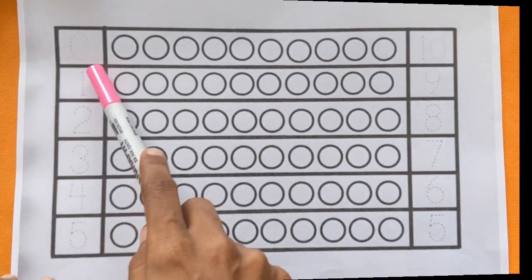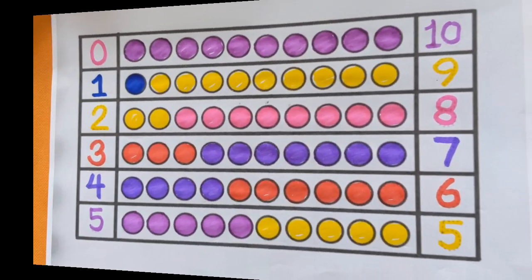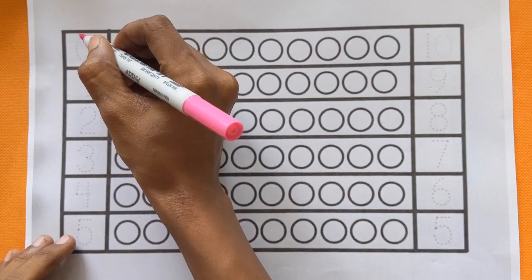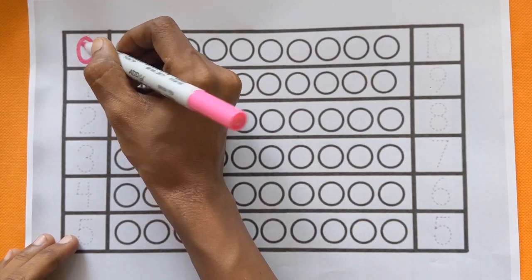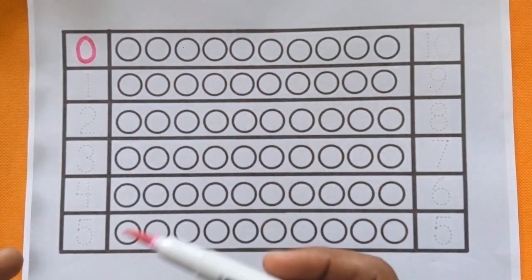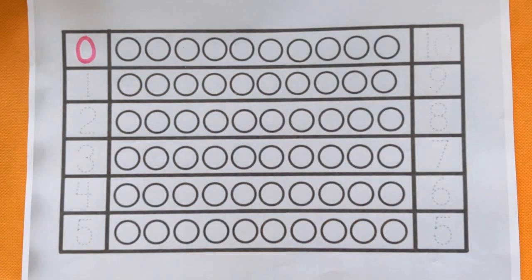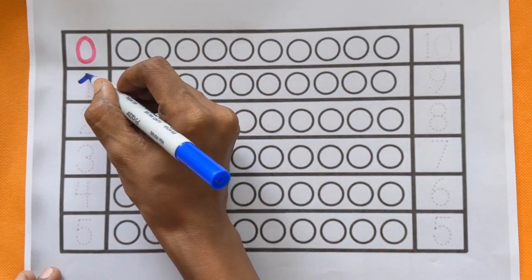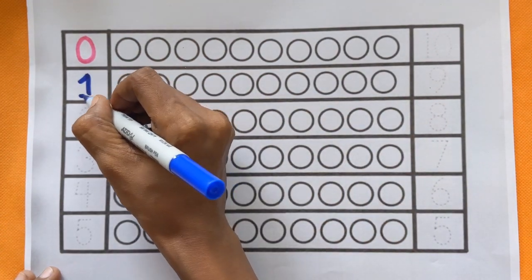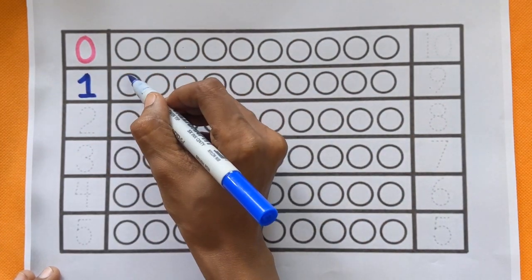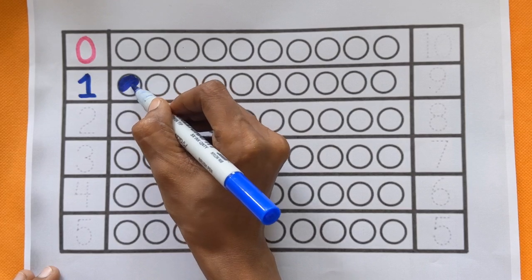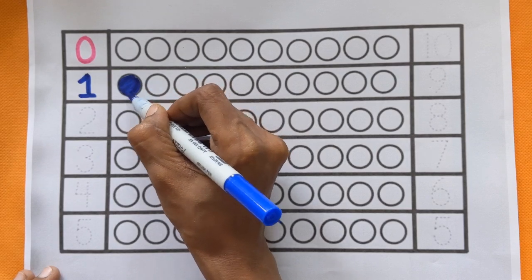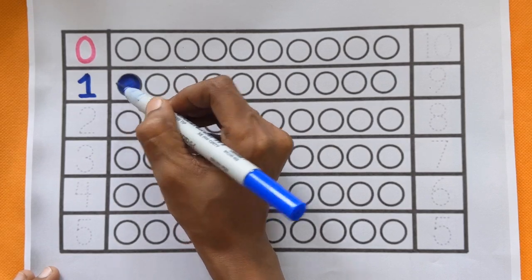Today we will learn 1 to 10 counting. 0 means nothing. 1. Let's color the 1 ball with a dark blue color.